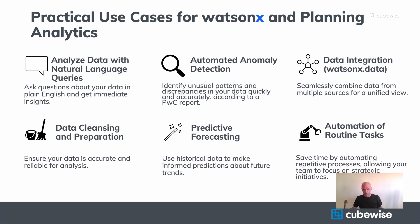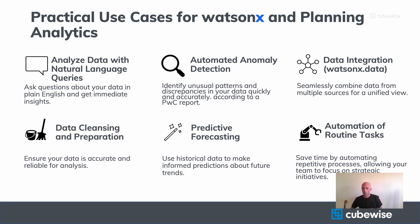The second use case is automated anomaly detection. We can use WatsonX with machine learning to detect patterns or anomalies in huge data sets that might be missed by traditional analysis — saving time and manual effort. The third use case covers data integration, the WatsonX.data component. This lets you combine all of your data from disparate sources or public data, bring it all into one place as a single source of truth, so your data is always up to date and accessible, significantly reducing data processing time.